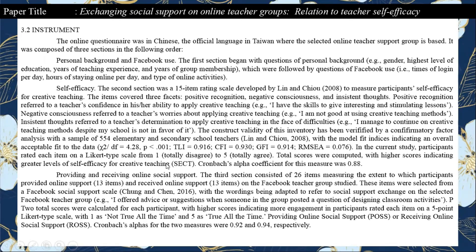This is the instrument of the journal. Here, we are going to find out what kind of question type the researcher used. Looking at the first indicator — personal background and Facebook use — the questions include gender, highest level of education, years of teaching experience, and years of group membership. There are also questions about Facebook use such as times of logging in per day, cost of staying online per day, and type of online activities. From here, we can conclude that the questions here are using open-ended questions because there are a lot of various possibilities to answer.